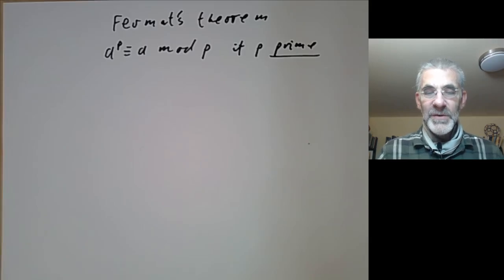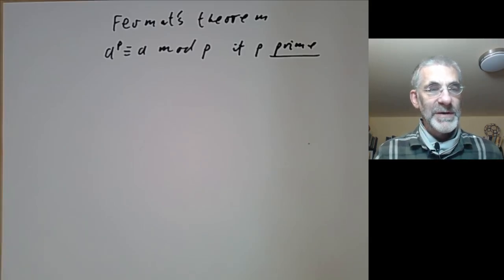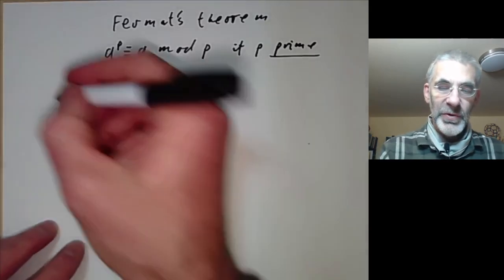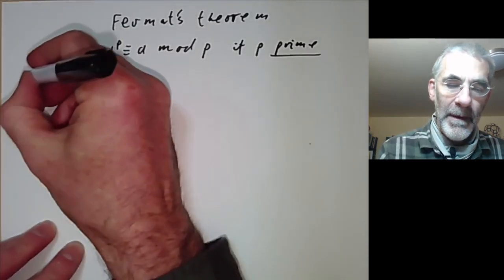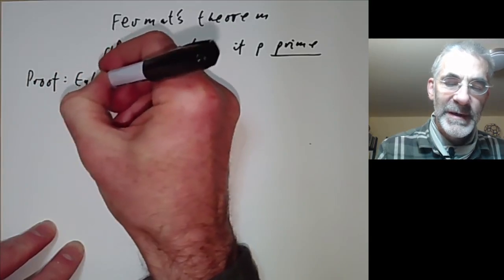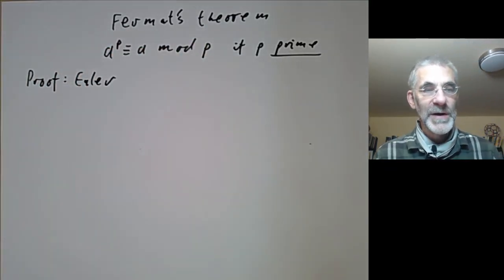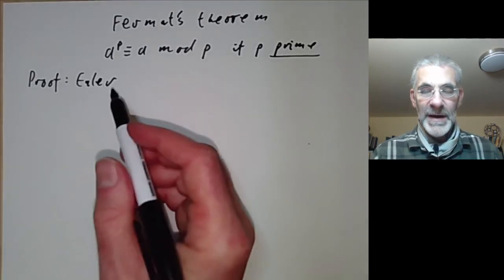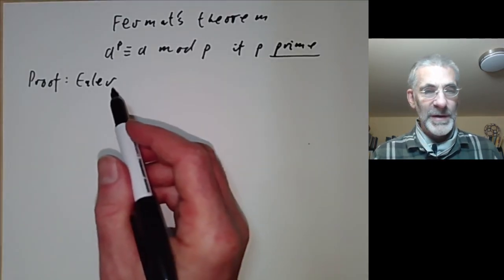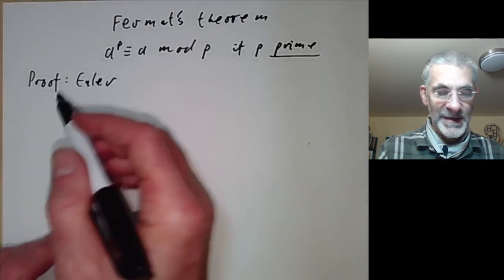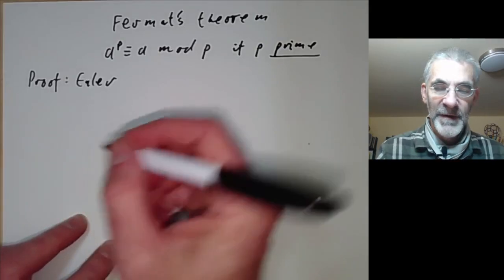It was originally proved by Fermat, but many of Fermat's proofs have just been lost. The following proof was given by Euler, who spent quite a lot of his life reconstructing Fermat's work. It's quite likely that Euler's proof may have been the same as Fermat's — it's a fairly obvious way of proving it.